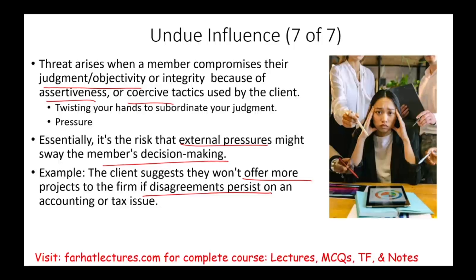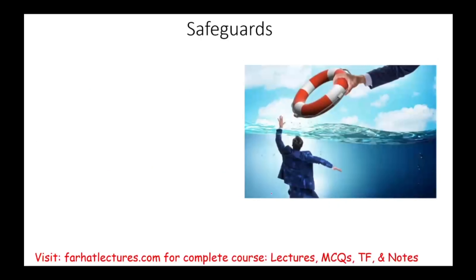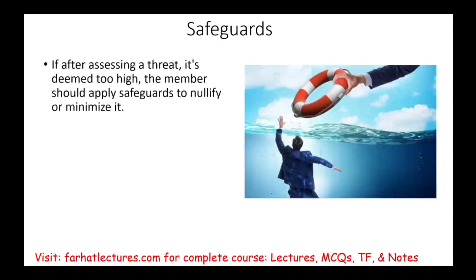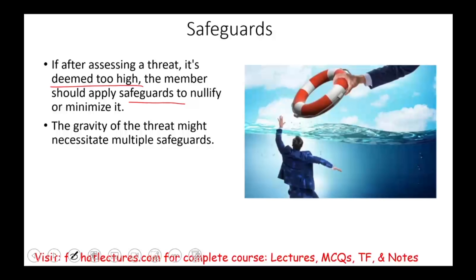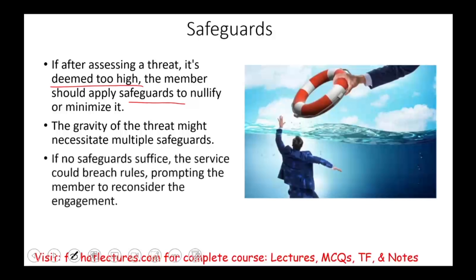After looking at those seven threats, we have to have safeguards — some sort of protection to make sure we are defending ourselves against those threats. If after assessing a threat it's deemed too high, the member should apply safeguards to either nullify it or minimize it. Assessing means determining how important and real that threat is. The gravity of the threat might necessitate multiple safeguards. If no safeguards suffice, the service could breach the rules, prompting the member to reconsider the engagement.